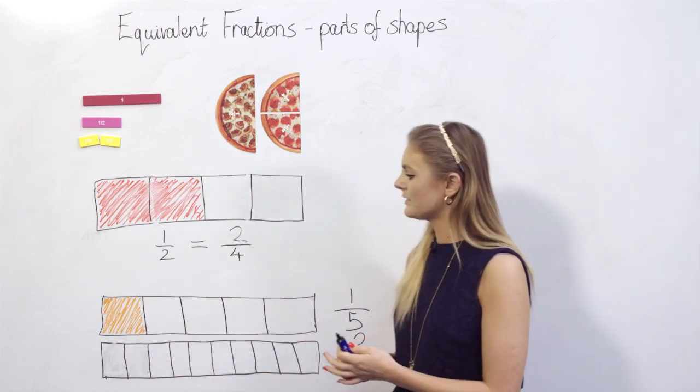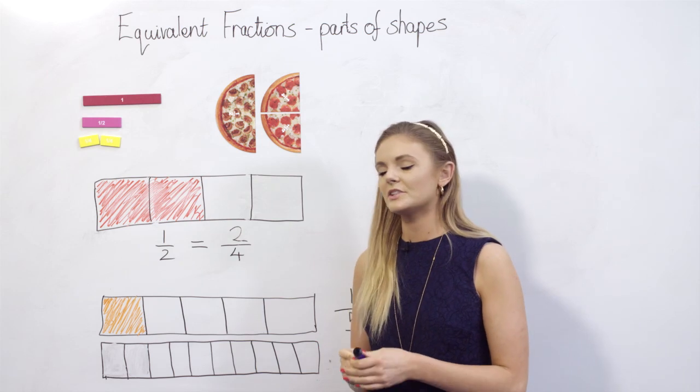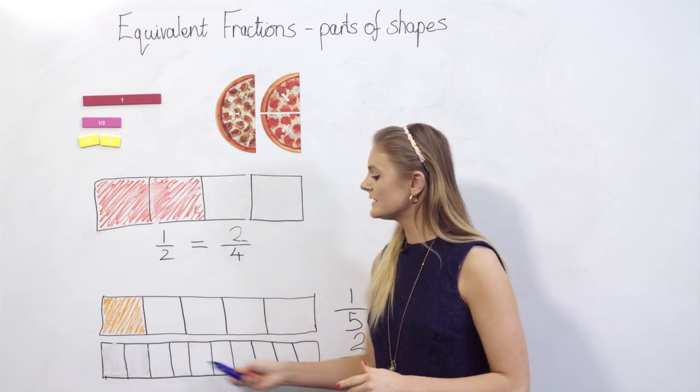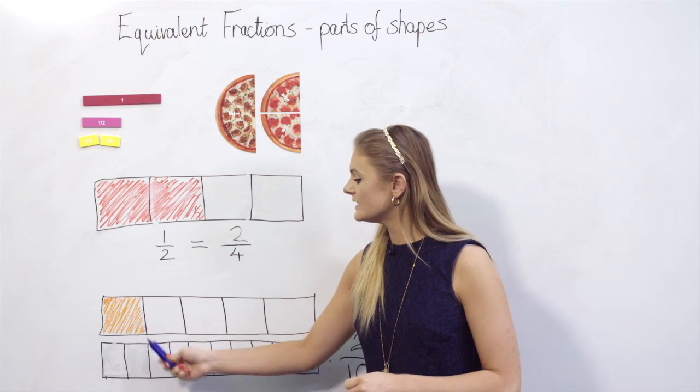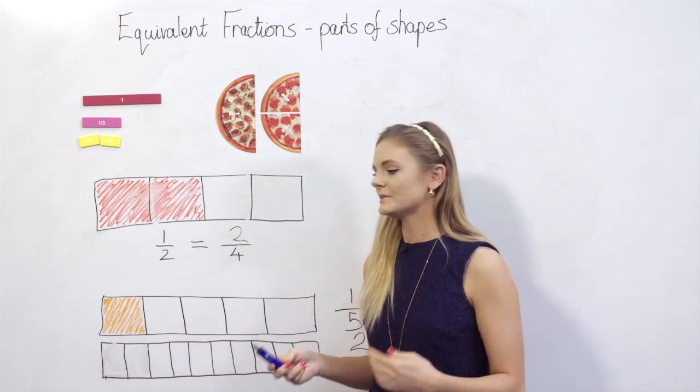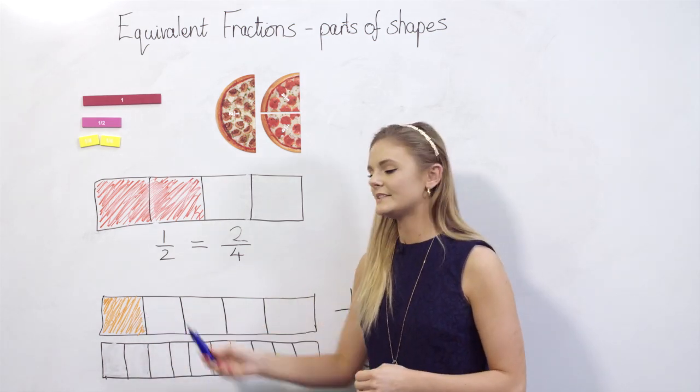So if I have one fifth, it'd be a good idea to ask the children how many sections of this bar divided into tenths would I need to shade in to represent the same amount as that one fifth that's been shaded in up here.